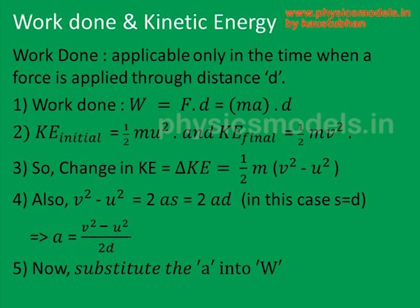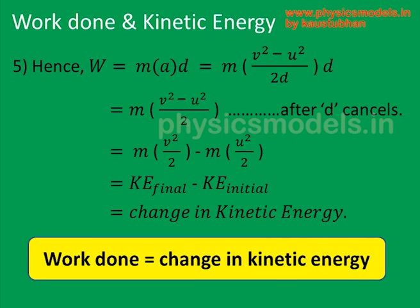Substitute a as (v squared minus u squared) divided by 2d and put that into equation 1. You get work done equals mass times acceleration times distance, and instead of a you plug in (v squared minus u squared) divided by 2d. The d's cancel, and you get work done in terms of kinetic energy: m times v squared over 2, minus m times u squared over 2, which is the same as half mv squared minus half mu squared — the change in kinetic energy, final minus initial. Therefore, work done equals change in kinetic energy.